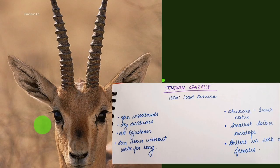Next we have the Indian gazelle. They are found in open woodlands and dry scrub forest. These conditions are available in the northwestern Rajasthan region. Since Rajasthan has a water shortage, the Indian gazelle is adapted to survive without water for long periods. They are called Chinkara, are not native to India but native to Iran, and are the smallest Indian antelope.